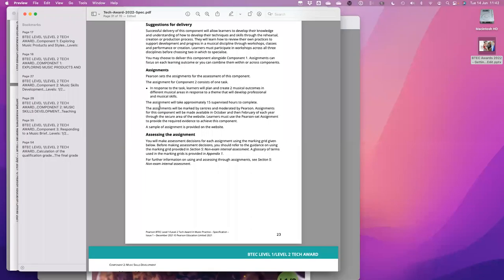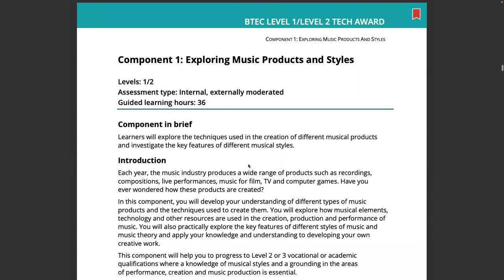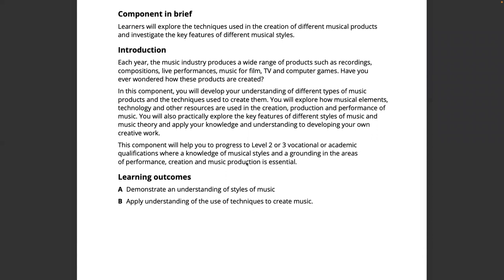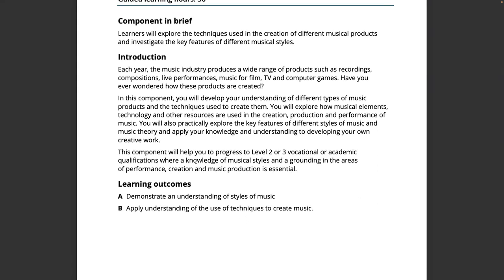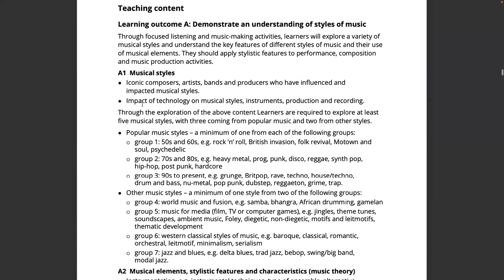Let's have a quick look at component one. I commonly refer to this as Key Stage 3 on steroids. Your learners have just arrived in your Key Stage 4 class — a smaller, more dedicated group that has selected music, with more contact hours. You can do similar projects to Key Stage 3 but get a little bit more under the hood. They need an understanding of music and styles of music, how people create music, what musical styles are, who the iconic composers are, and the impact of technology. They also need to look at popular music styles.